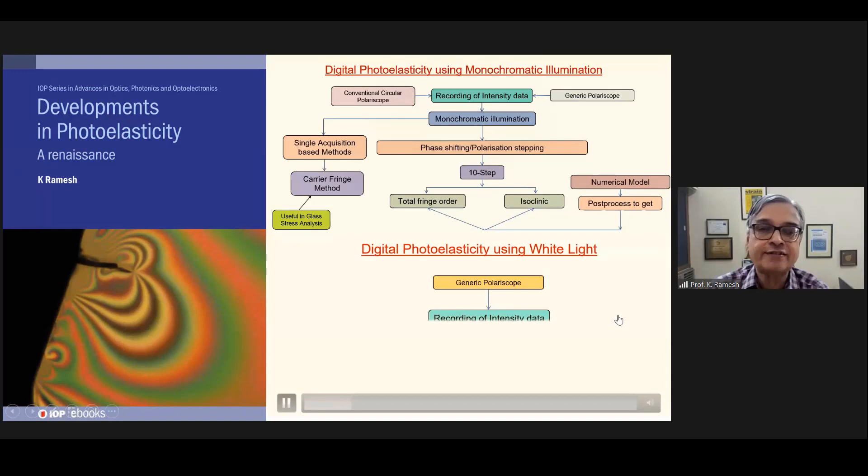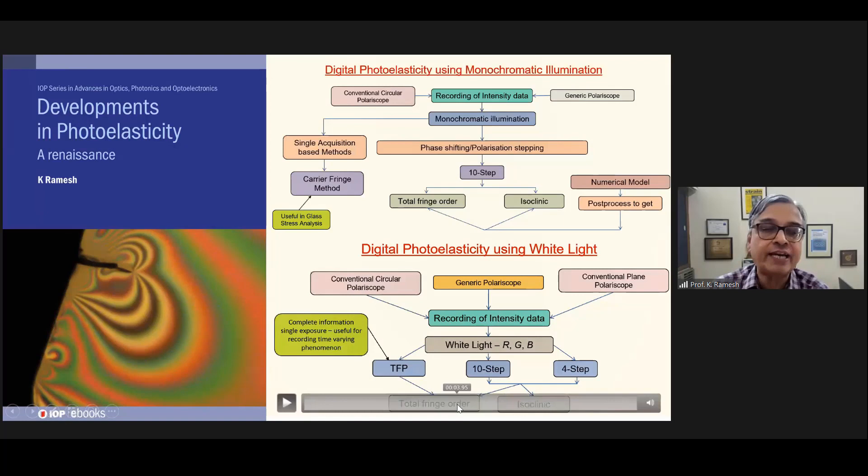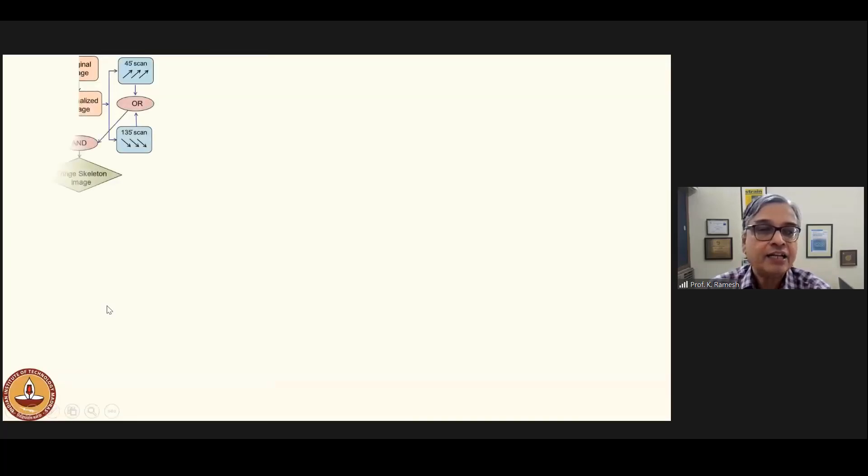With developments in digital photoelasticity, the book also advocates use of a conventional polariscope with four steps to get total fringe order and isoclinic. On the other hand, use of a conventional circular polariscope with just one image for total fringe order evaluation is useful for solving time-varying phenomena. The message in the book is institutions that have polariscopes can rejuvenate to digital photoelasticity with appropriate software rather than buying a generic polariscope at high cost.